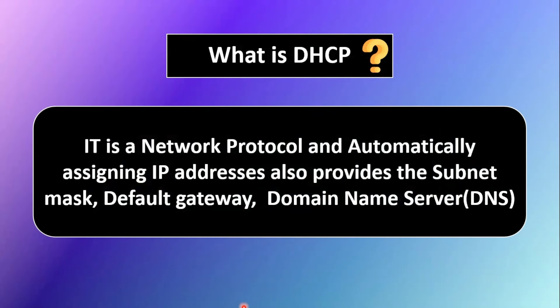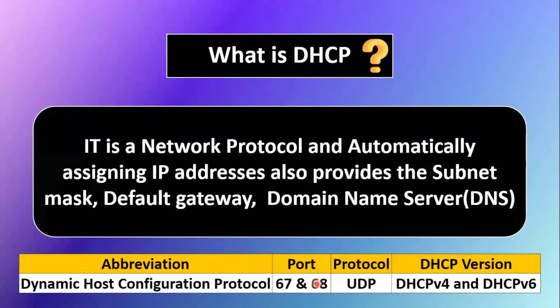This automation process prevents manual assignment of IP addresses. Not only IP addresses — DHCP also provides subnet mask, default gateway, DNS, and other configuration. DHCP uses two ports: 67 and 68. Port 67 is used on the server side and port 68 is used on the client side.